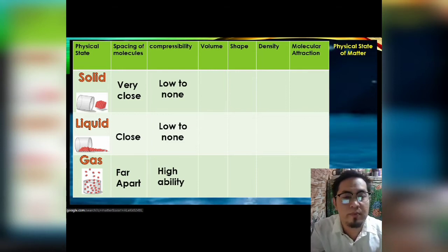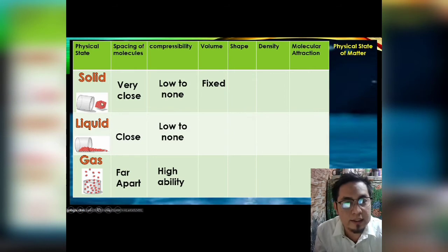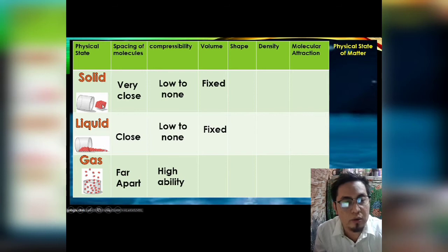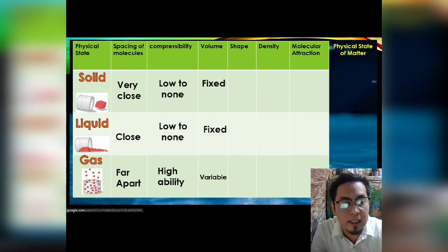Now let us go to volume. The volume of solid is fixed. Since the molecules are very close to each other, their volume is fixed. Liquid also has a fixed volume, just like solid. Gas, however, has a variable volume — it is not fixed.